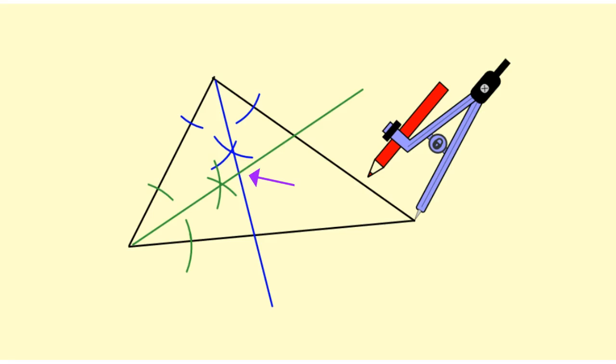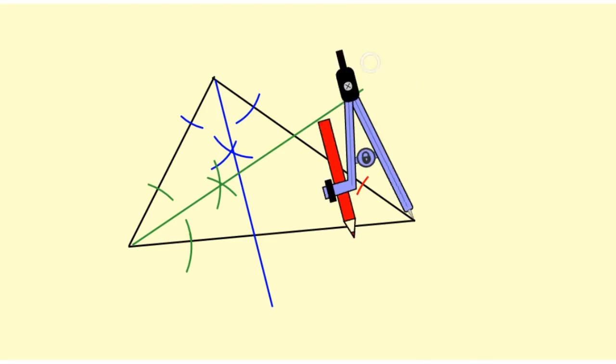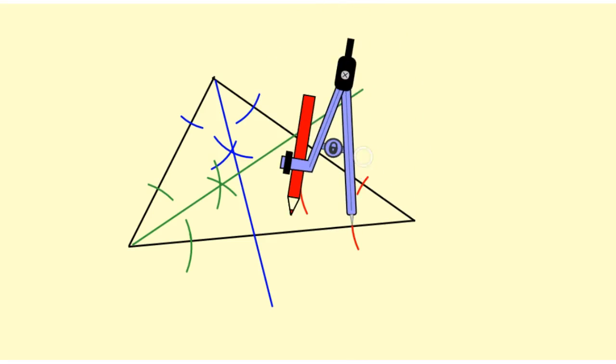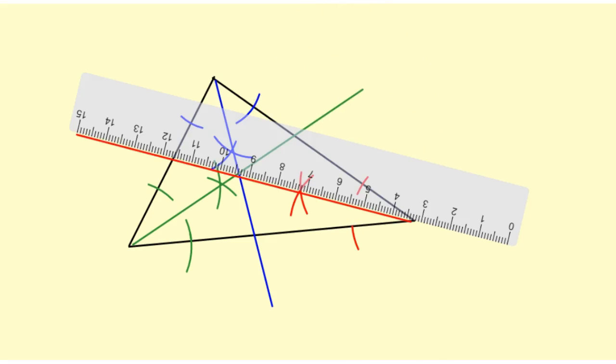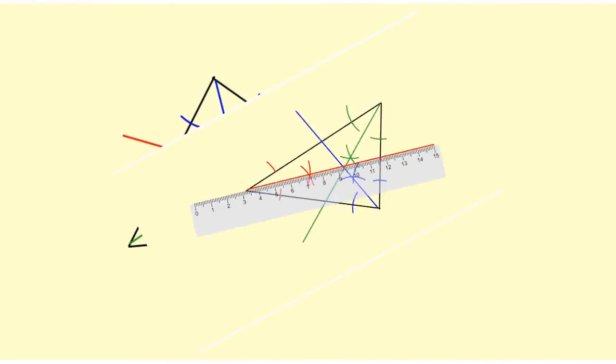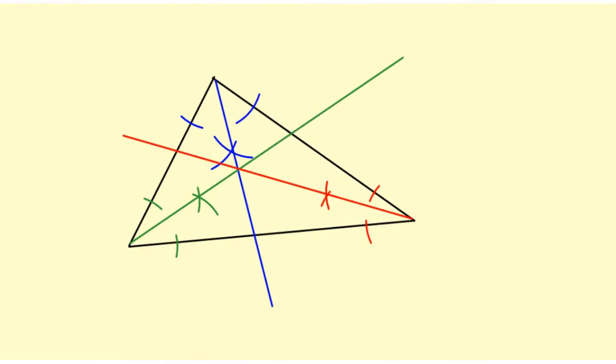You can go ahead and construct the third angle bisector if you want to, but having the point of intersection from the two is sufficient. I've constructed each of the angle bisectors in a different color so you could see the construction marks.